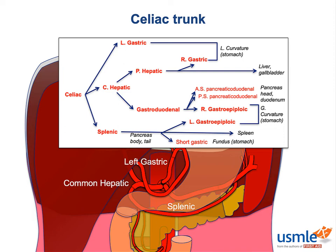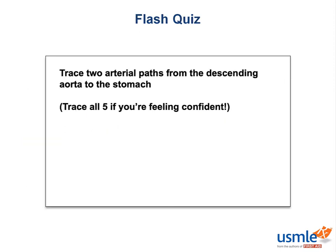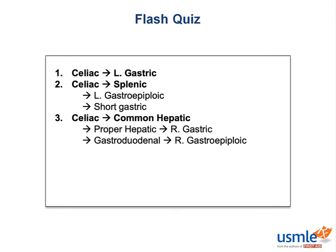Let's check your knowledge of GI arteries with a flash quiz. Your job is to trace two paths — or all five if you like a challenge — from the descending aorta to the stomach. Every single major branch of the celiac artery supplies the stomach in one way or another. The left gastric is the most direct. The splenic artery has two branches: the short gastric to the fundus and the left gastroepiploic at the greater curvature. The common hepatic is the origin of both right-sided branches: the right gastric off the proper hepatic, and the right gastroepiploic from the gastroduodenal artery. If you're ever quizzing yourself on celiac distribution, try to remember all five paths to the stomach — that'll leave you covered pretty well.